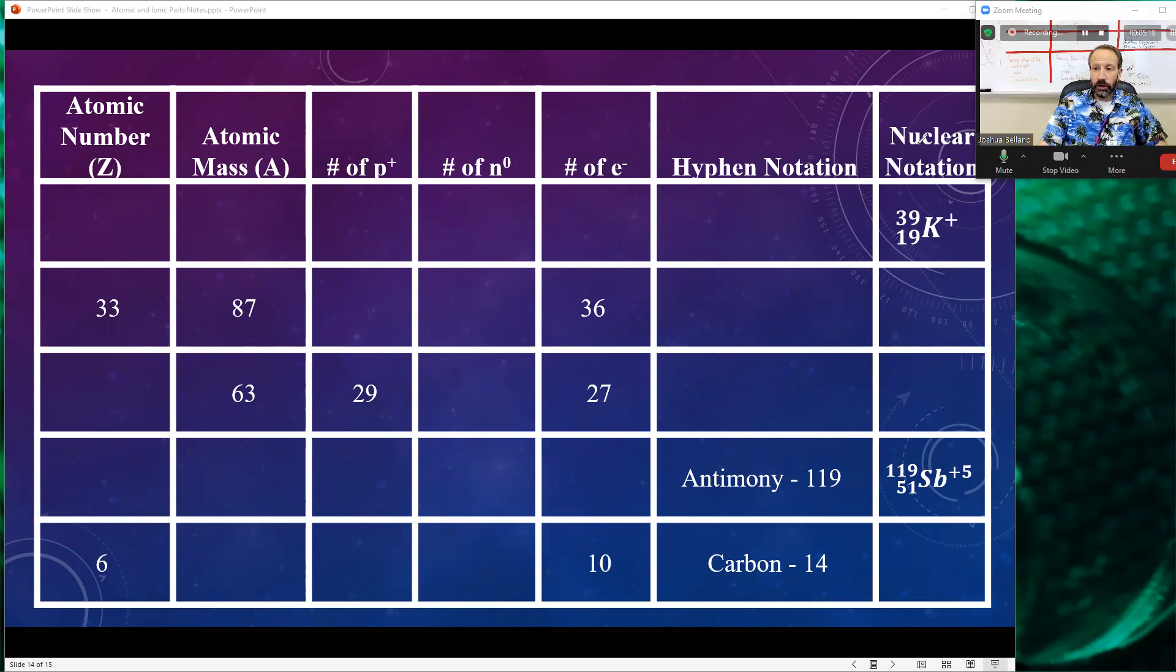Here I have nuclear notation going on. This is obviously potassium. I've got a 39 and a 19. So what do I know? I know this 19 tells me I have an atomic number of 19. My atomic mass is 39. Whatever my atomic number is, my number of protons is that, so there's 19. I subtract for neutrons, there's 20. Normally we would have said 19 protons is cancelled with 19 electrons, but it's not cancelled this time. Check this out.